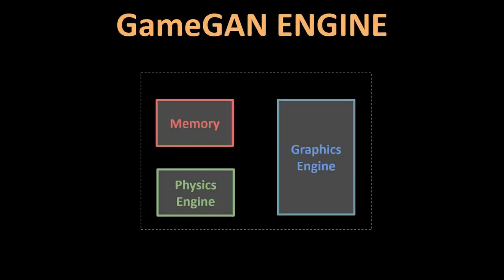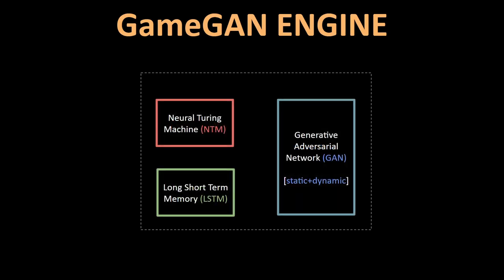Let's take a look at the GameGAN framework. Like any traditional game engine, this has a physics module, a graphics rendering engine, and a memory module. But the big difference is that instead of coding these engines by hand, they use different neural networks like LSTM, Neural Turing Machines, and GANs. The GAN even managed to learn the difference between the static and dynamic parts of the game, like the walls which are static and the moving characters that are dynamic.